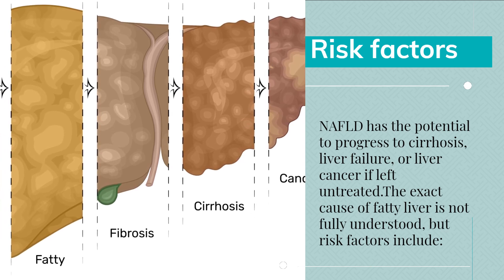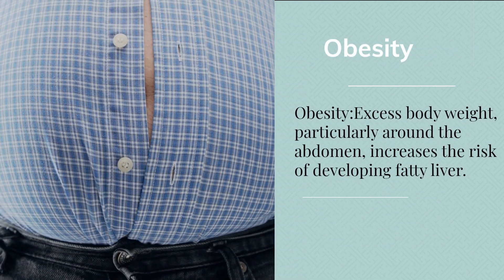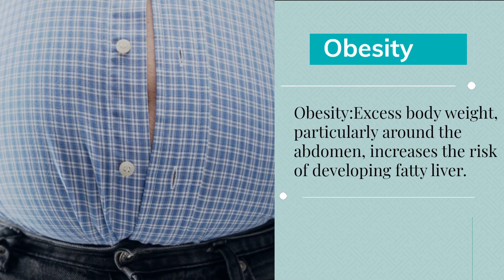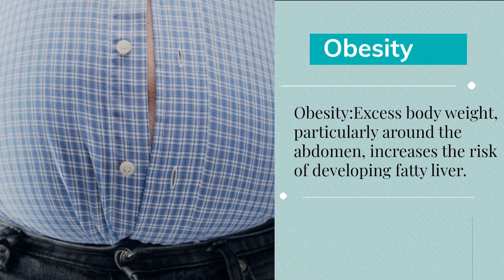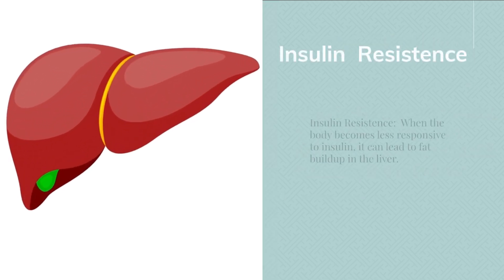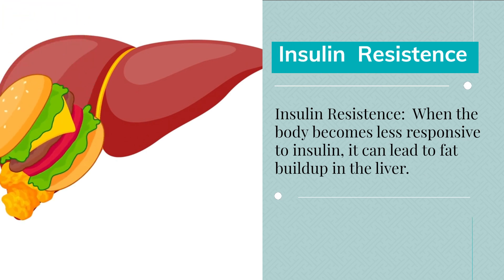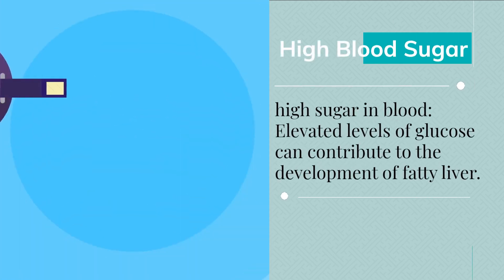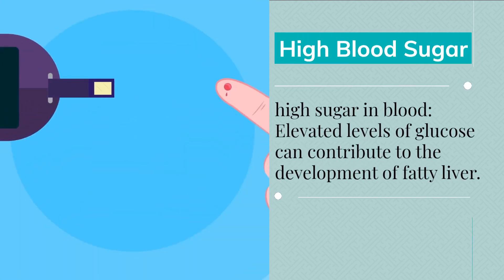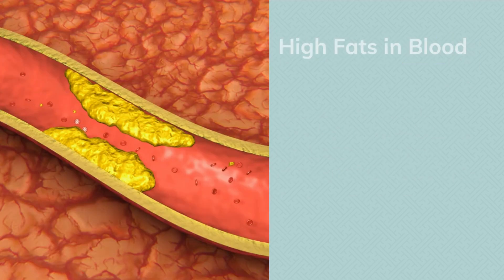The exact cause of fatty liver is not fully understood, but risk factors include obesity — excess body weight, particularly around the abdomen, increases the risk. Insulin resistance, when the body becomes less responsive to insulin, can lead to fat buildup in the liver. High blood sugar, with elevated glucose levels, can also contribute to the development of fatty liver.